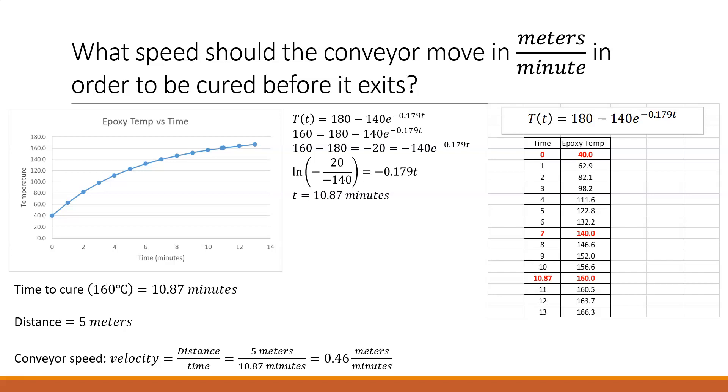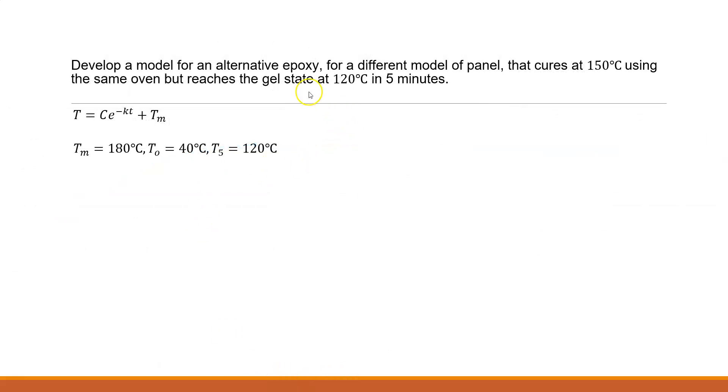So now we've got the next two questions. Another model for a different epoxy. So this one actually reaches its gel state at 120 degrees in five minutes. And it also enters at the same 40 degrees. And it cures at 150, so a lower temperature. And again, this is the differential equation once we've gone through and solved it. And now we just have to apply the variables to it. So we do have an initial value, or it's going to be a secondary point. We know at five minutes, it's going to be 120 degrees. So we set this up, and we're going to solve for a K value. We end up with 120 minus 180 divided by negative 140. Take the natural log of both sides. And we end up with K equals 0.169.